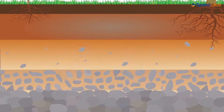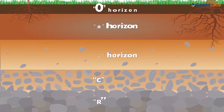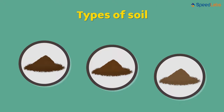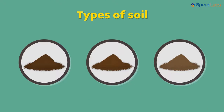So, this was about the soil profile — the vertical section through which various soil layers can be seen. Now let us move ahead and talk about the various types of soil in the upcoming videos.